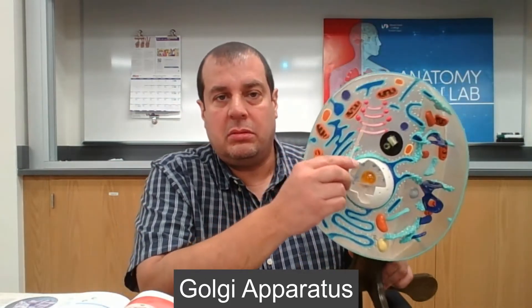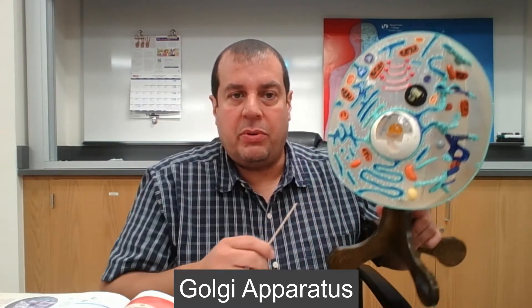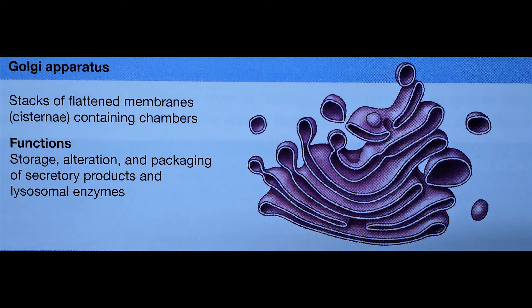The Golgi apparatus is a structure made of stacks of flattened membranes containing chambers. Its function is the storage, alteration, and packaging of secretory products and lysosomal enzymes. The Golgi apparatus produces the lysosomes you see in the cell, and also transports secretory products through vesicles, fusing to the cell membrane to exocytose proteins or other materials.